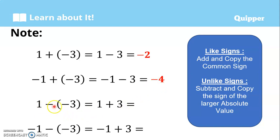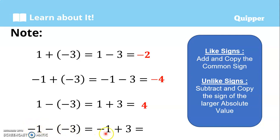Next, for 1 minus negative 3: when two negatives are side by side, they become positive, so it becomes 1 plus 3, and the answer is 4. For negative 1 minus negative 3: two negatives side by side become a plus sign, so we have negative 1 plus 3. Unlike signs — subtract 3 minus 1, that's 2, and copy the sign of the larger absolute value, which is positive. So the answer is 2.